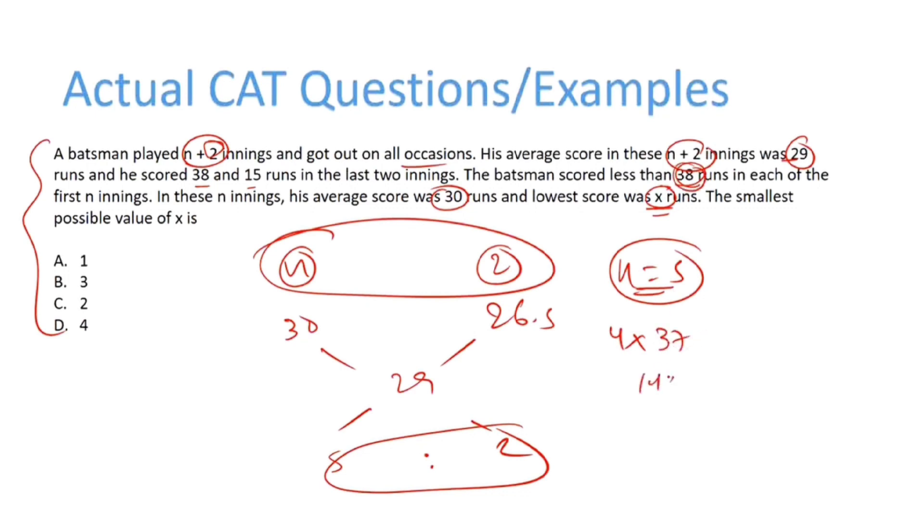So 4×37 becomes 148. Then the final one remaining will be 2, in which case this becomes 150. Why 150? Because for these 5 innings, the average has to be 30 and the total has to be 150.